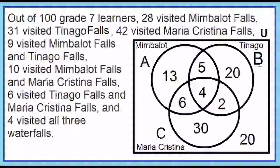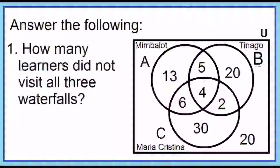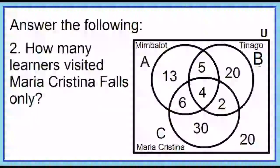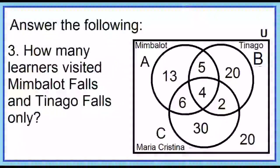Answer the following questions using the Venn diagram. How many learners did not visit any of the three waterfalls? Twenty. How many learners visited Maria Christina Falls only? Thirty. How many learners visited Mimbalut Falls and Tinago Falls only? Five.